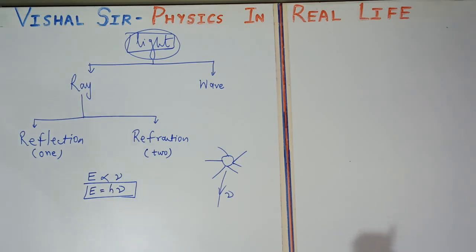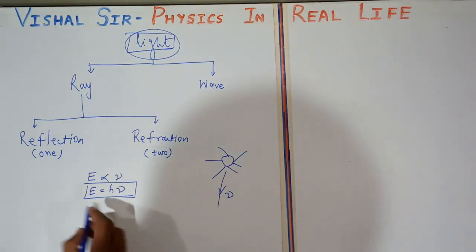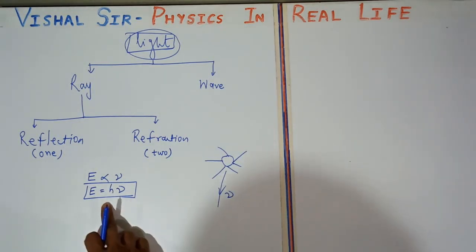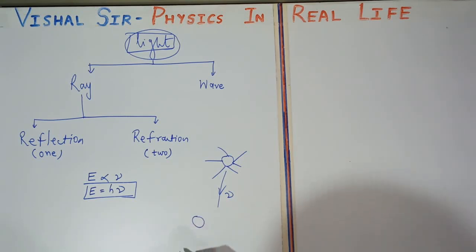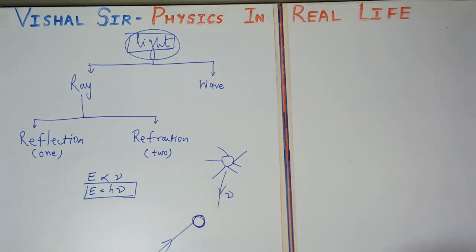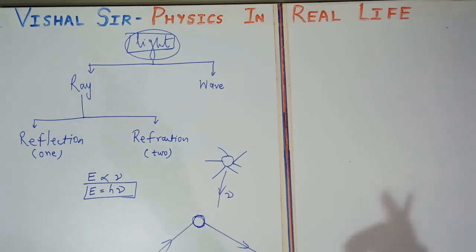Light is a form of energy which helps us to see objects. The formula E = hν is not in the 10th class syllabus — it belongs to higher classes. When light falls on an object, the object reflects it back into the same medium. For example, if you place a torch here and you are standing there, the reflected light from the object reaches your eyes and you see it.